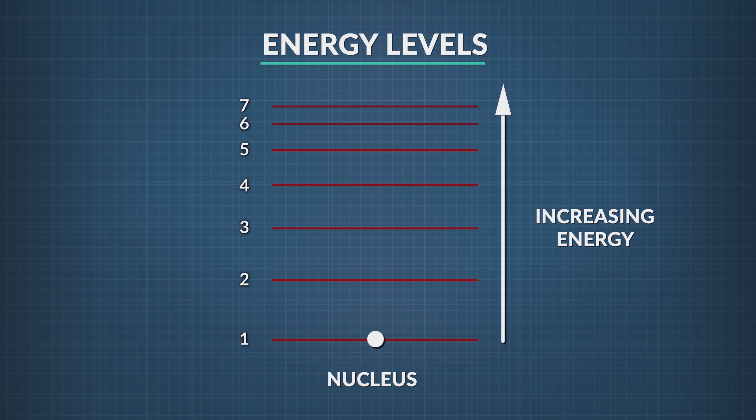When an atom absorbs a high energy photon, electrons will jump to a higher energy level. When an atom absorbs a lower energy photon, it will not jump as far.